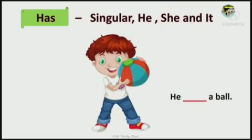Second, he dash a ball. Is he is there in the rule box? Check it. Singular he, she, she and it. Yes, he is there. So, what we will write? Has. He has a ball.